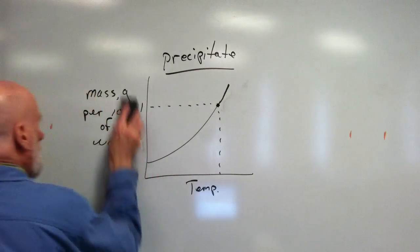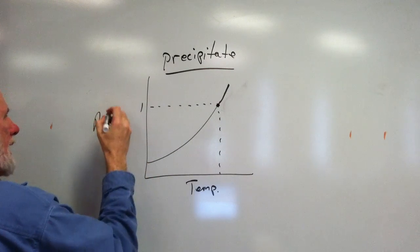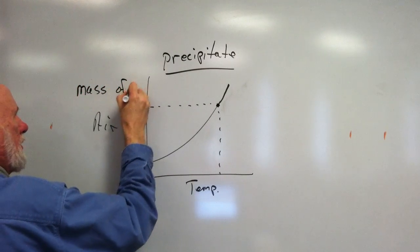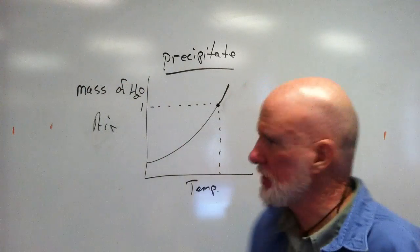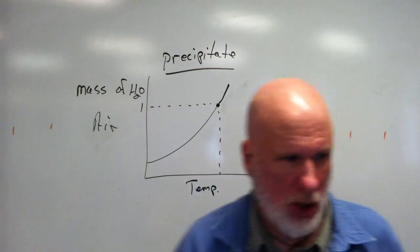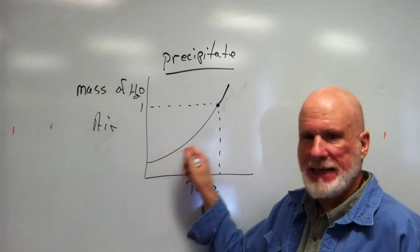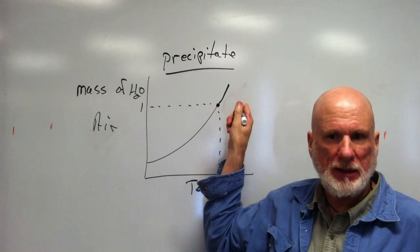Well let's say this is air. So this is mass of water dissolved in air, we'll say. We're making this up as we go along. The idea is that this is temperature. High temperature, I can put in a lot more water into the atmosphere, correct?